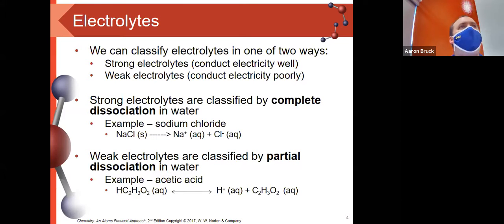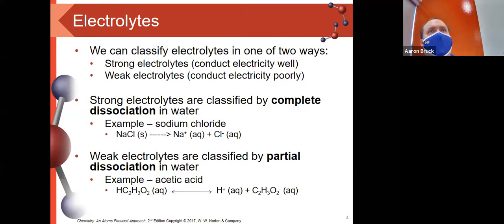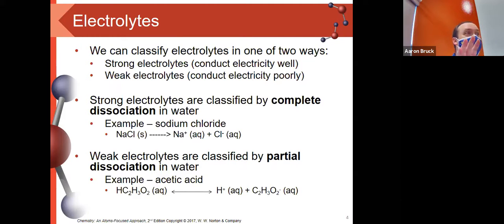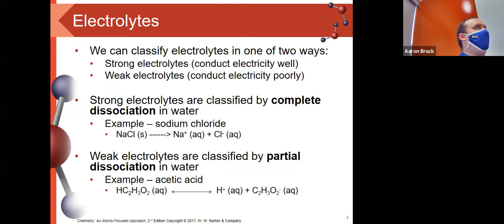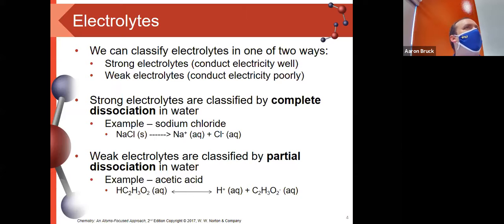In strong electrolytes, water is able to pull the substance apart completely, and we get lots of positive and lots of negative ions present. Ionic compounds are really good about this. We saw in chapter six those drawings where we had the positive ion and the negative ion. It was really nice to read those essays and see that most of you knew what you were talking about — most of you were able to get that question right.